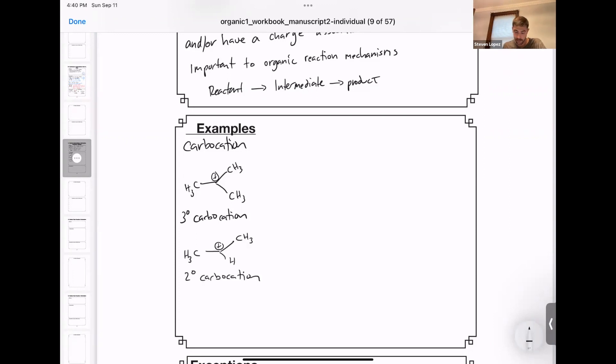An example of a primary carbocation. Here, this carbon with the positive charge is attached to two groups that are hydrogens and one group that is not a hydrogen, making this a primary carbocation.